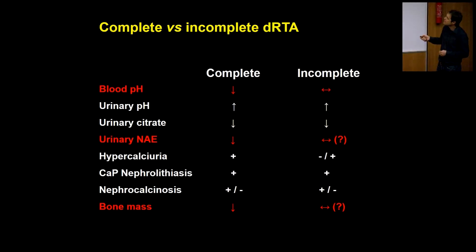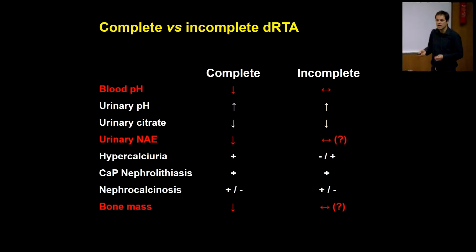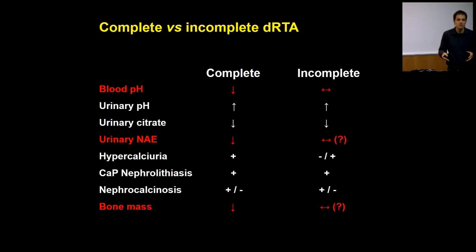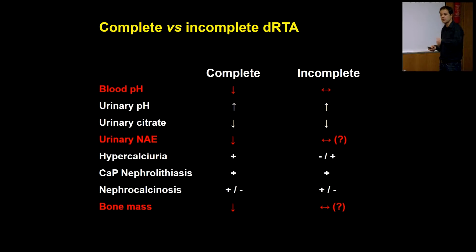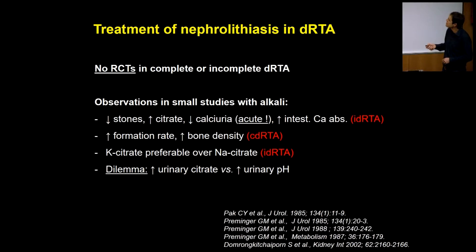The key differences are net acid excretion and bone mass. But the high pH, low citrate, and calciuria — often but not always elevated — favor calcium phosphate stone formation. Sometimes nephrocalcinosis is also present, although it's not always clear what is the chicken and what is the egg: DRTA can lead to nephrocalcinosis, but nephrocalcinosis can also cause acidification deficits.